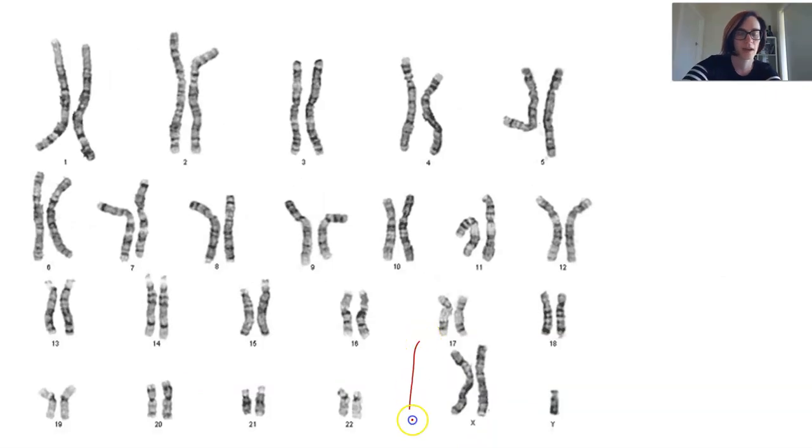Here we have a person who has Klinefelter. We can see really clearly they have two X chromosomes and a Y. So that's the kind of thing you need to be looking for.